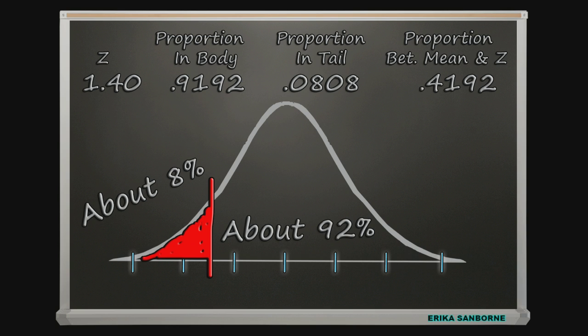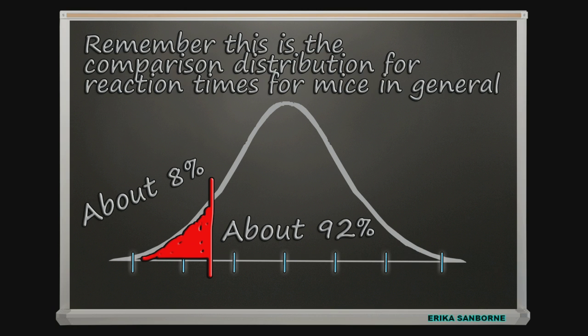And this is where we usually have a decision to make. Is Seymour's score extreme enough or impressive enough that we can say, you know what, it's unlikely to have occurred by chance if the vitamin compound thing doesn't do anything? I mean, 8% of the time, a mouse is that quick anyway.